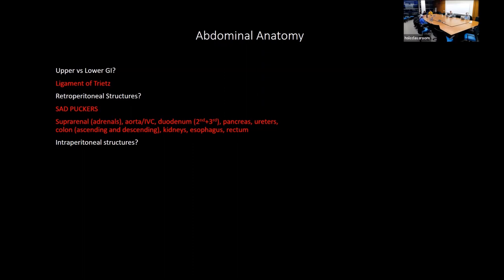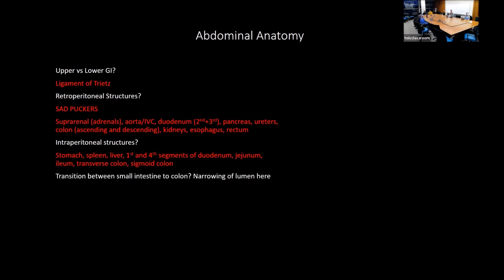What structures are intraperitoneal? Usually if you memorize what's retroperitoneal, you can figure out the rest. An important anatomic point is the transition between the small intestine and colon — the ileocecal valve. There's a narrowing of the lumen here, and an ileocecal fat pad you can use to identify the appendix.